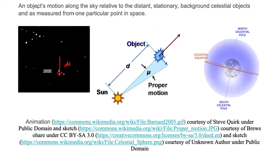Proper motion is an object's motion along the sky relative to the distant stationary background celestial objects. If you look closely in the image, you see a bunch of background objects. These objects appear stationary even though they probably do move a little bit over time, but they're so far away from us that they appear as stationary background celestial objects.